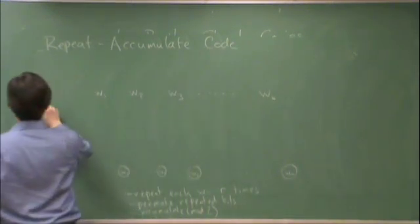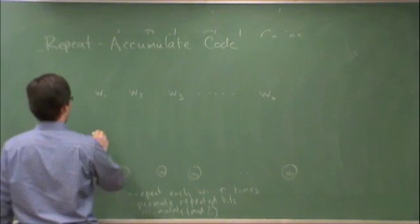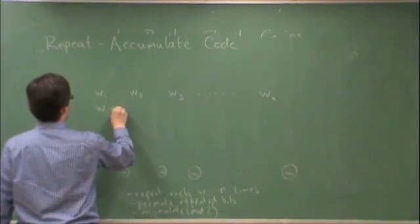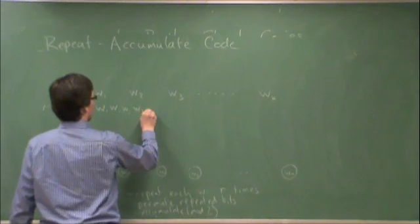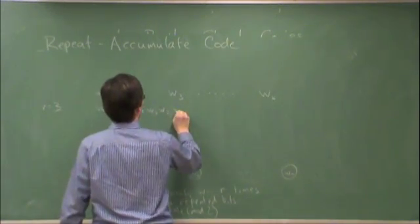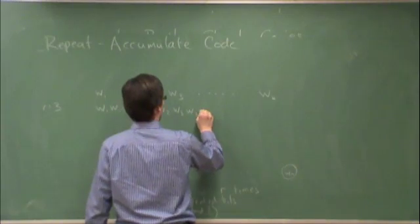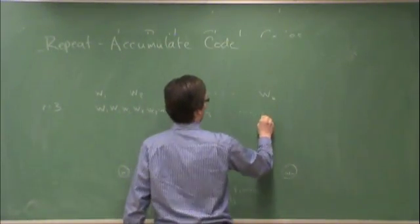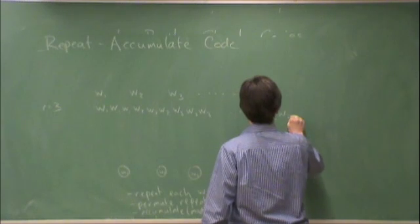So, if r is 3, then we have w1, w1, w1, w2, w2, w2, w3, w3, w3, and so on up to wk, wk, wk.